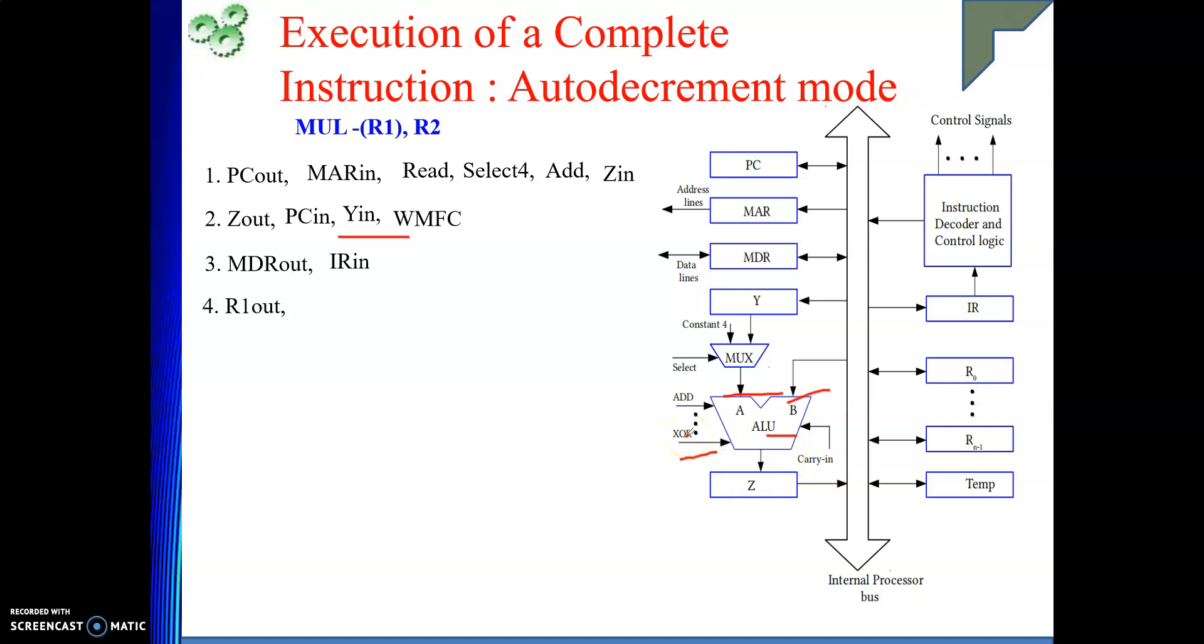See how I am going to do. R1 out, then select 4. R1 out means data is on the bus. It is available in the B input. Then select 4. This input has come to A input of the ALU. Now, I will perform sub. Result will go to Z register. Please do understand to decrement R1 you need not have to go to memory. It will be done by the ALU only. It is Z in.